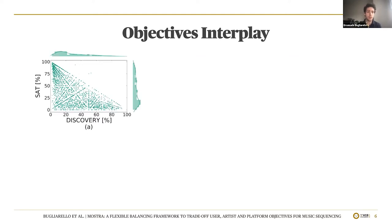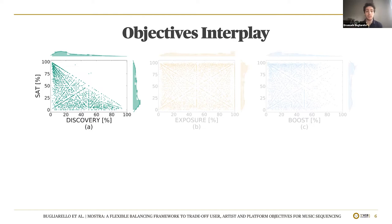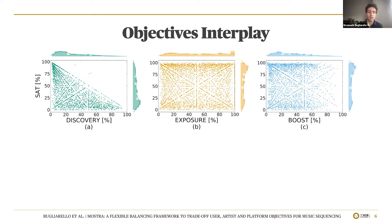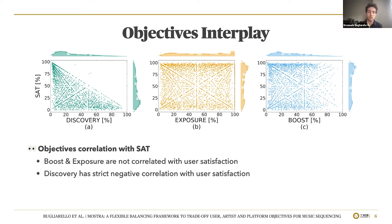Now that we have all these objectives, we try to understand how they interact with the user satisfaction score. Here you can see a scatter plot where the x-axis denotes the percentage of songs labeled as discovery in a given streaming session, and the y-axis is the average SAT score for the corresponding session. When we look at these plots for all creator-centric metrics, we find that exposure to emerging artists and boost to strategic content are not correlated with user satisfaction. On the other hand, surfacing many discovery tracks ends up hurting user satisfaction, as listeners tend to skip most of them.